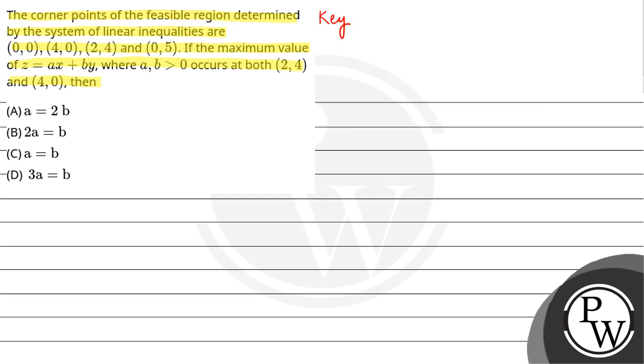So here our key concept is objective function. So here our function given is Z equals to AX plus BY.